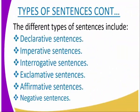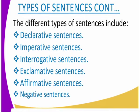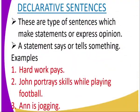We are going to look at the different types of sentences and name them one by one. The types of sentences include: exclamative, declarative, interrogative, affirmative, negative, and imperative sentences. We'll begin with the first one — declarative sentences.